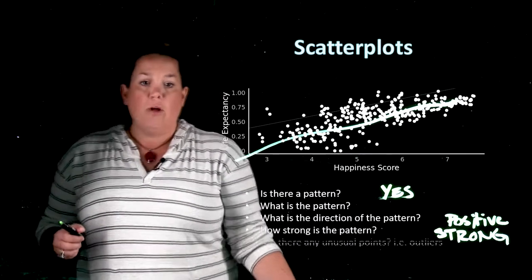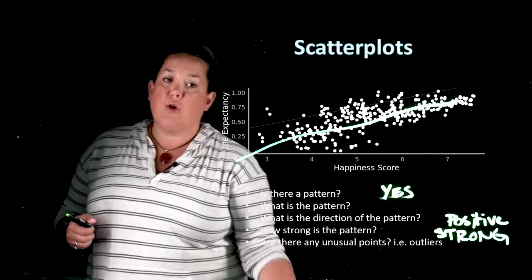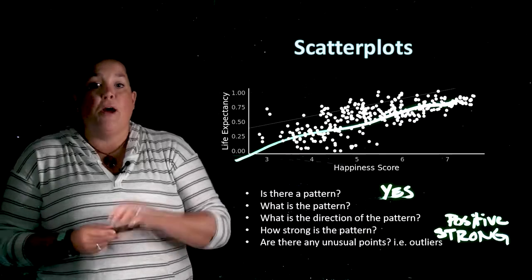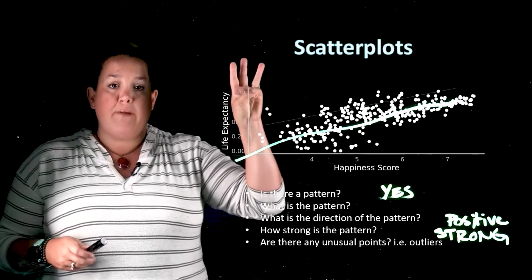And then the final thing that you're looking at when you're describing a scatterplot is if there are any unusual data points or outliers. Now there are three ways that things can be outliers.